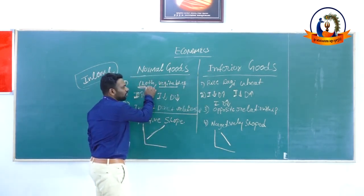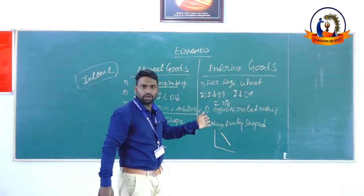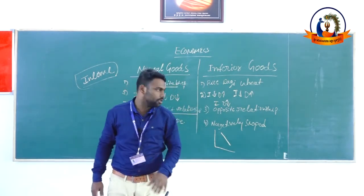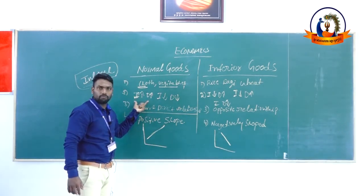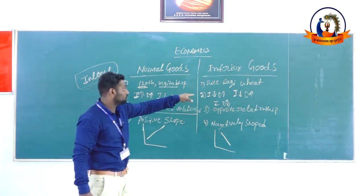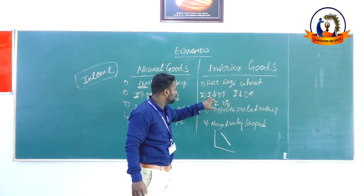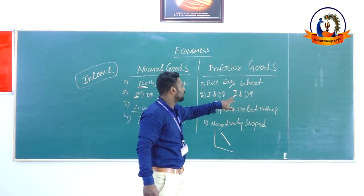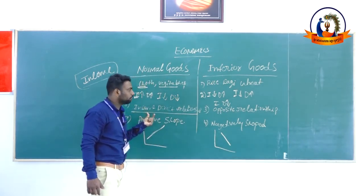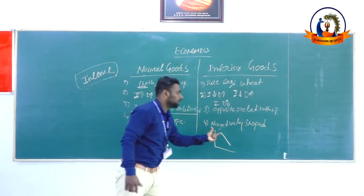Examples: normal goods include cloth, vegetables, shoes, and others. Inferior goods are food-related items like rice, ragi, wheat — the most essential goods for humans. For normal goods: when income increases, demand increases; when income decreases, demand decreases — this is a positive or direct relationship, giving a positively sloped demand curve. For inferior goods: when income decreases, demand increases — this is a negative or inverse relationship, giving a negatively sloped demand curve.